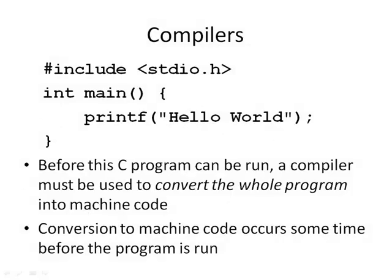In contrast, compilers convert the whole program into machine code before it can be run at all. Here we have an example of a C program — the entire program will be converted to machine code to create an executable file that's already in machine code, and then you can run the executable file. So all the conversion is done ahead of time before you run it.